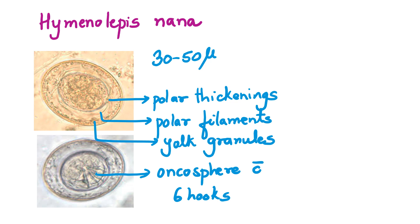H. nana: the egg is about 30 to 50 microns in size. It's rounded. You can appreciate there is an outer shell and an inner shell. Between the outer and inner shell, you can see polar filaments — small filaments originating at the poles from polar thickenings. We can also appreciate some yolk granules between the two shells. Inside the inner shell, we can see the onchosphere which has six hooks, so it is also called the hexacanth onchosphere. So H. nana: 30 to 50 micron sized eggs. Very important morphology — polar thickenings, polar filaments, and yolk granules between the two shells, and the hexacanth onchosphere inside the inner shell.